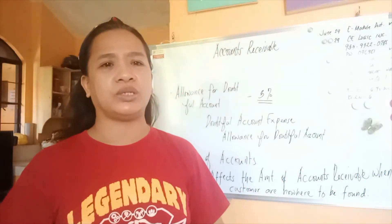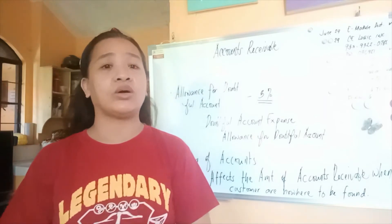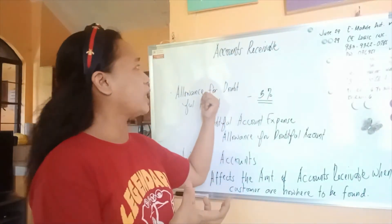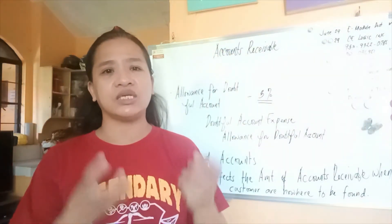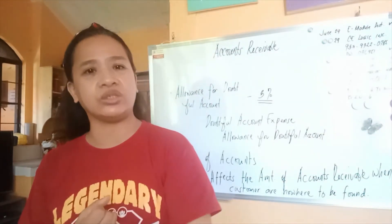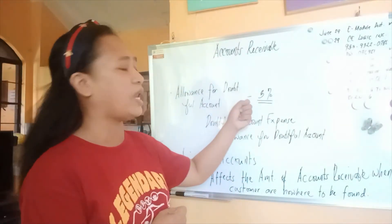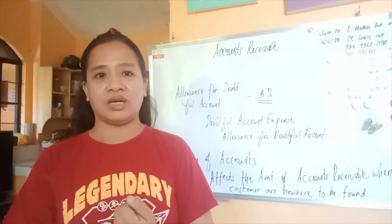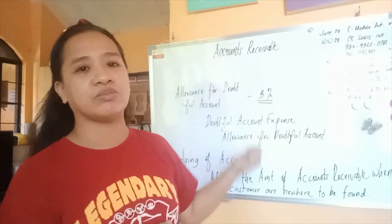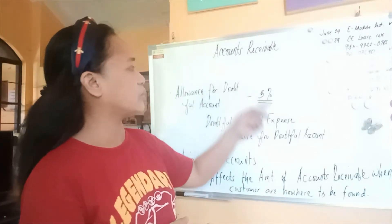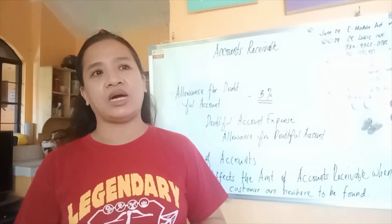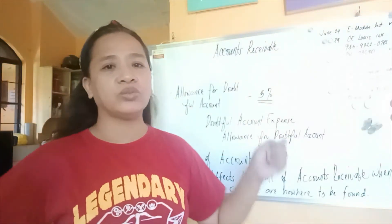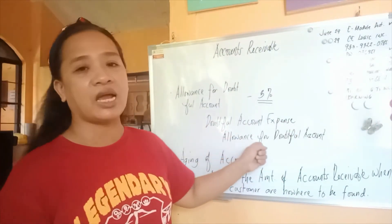What about the allowance for doubtful accounts? Allowance for doubtful accounts is a contra account of accounts receivable. When we say contra, it is not a regular account but it is considered a contra account of accounts receivable, because we consider that not 100% of receivables can be collected from customers. So we put at least a percentage of allowance — for example, 3% — as the allowance for doubtful accounts. We record: debit doubtful accounts expense, which is part of expense, and credit allowance for doubtful accounts.